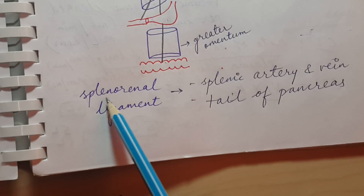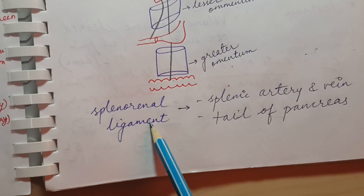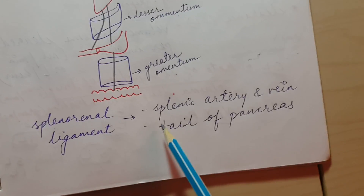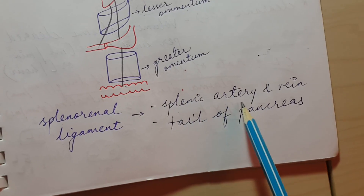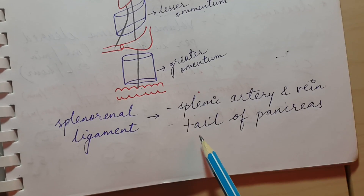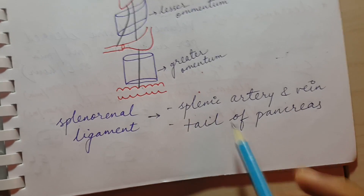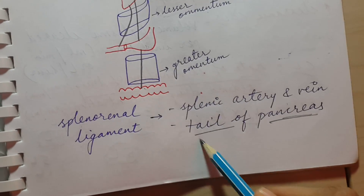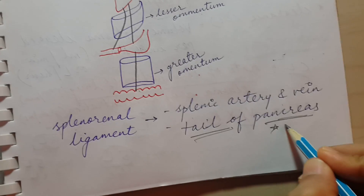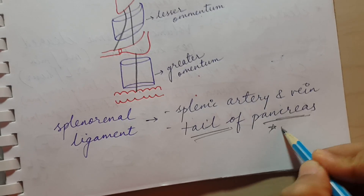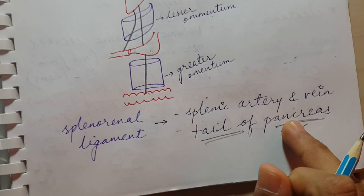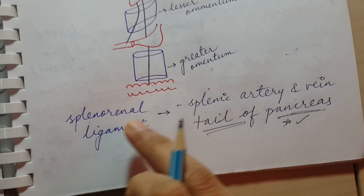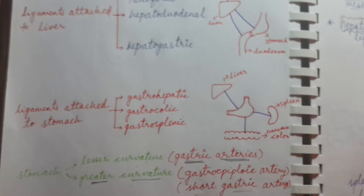The last ligament is the splenorenal ligament, which contains the splenic artery and vein. It also contains the tail of the pancreas — this is often forgotten, so remember that the tail of the pancreas is contained in the splenorenal ligament. This concludes the topic of GIT ligaments.